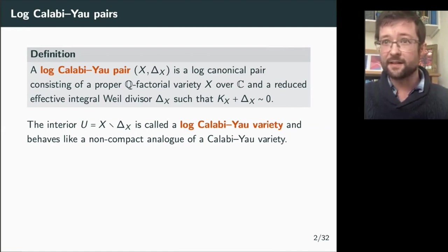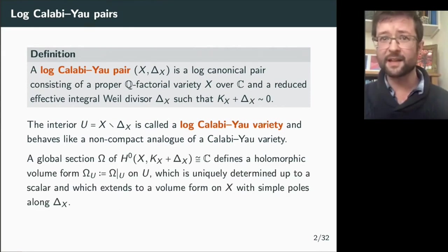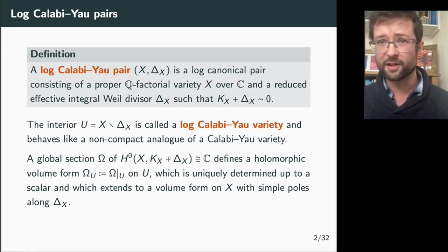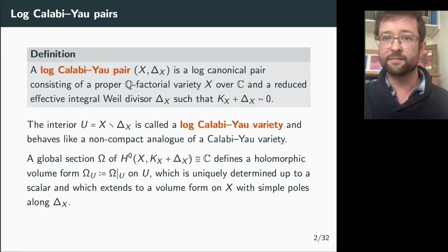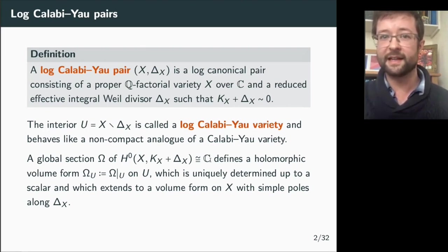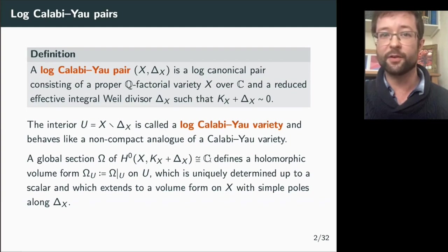The interior of this space is called a log-Calabi-Yau variety, behaving like a non-compact version of a Calabi-Yau variety. One way it generalizes Calabi-Yau varieties is that you can define a non-vanishing holomorphic volume form on it by taking a global section, which is uniquely determined up to scaling. This volume form on U extends to a form on X with simple poles along the boundary.